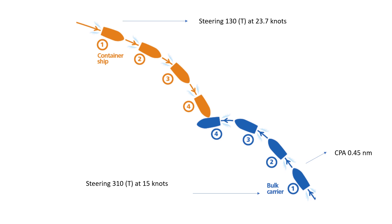This is at position number one. In position number two, at about 4.8 nautical miles away, the container ship made an alteration of about six degrees to starboard. Similarly, the bulk carrier made an alteration of five degrees to port.